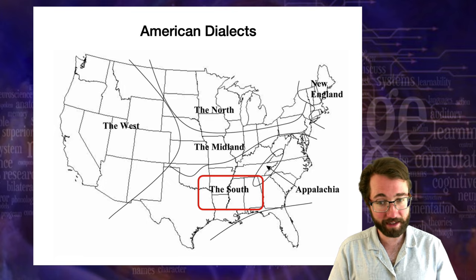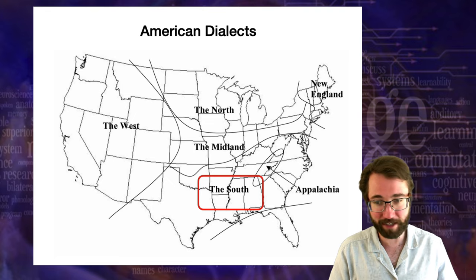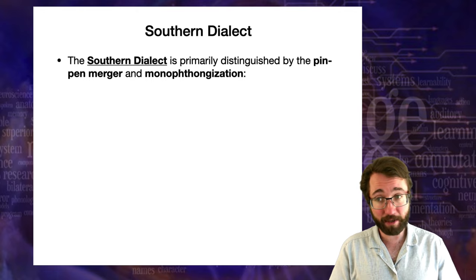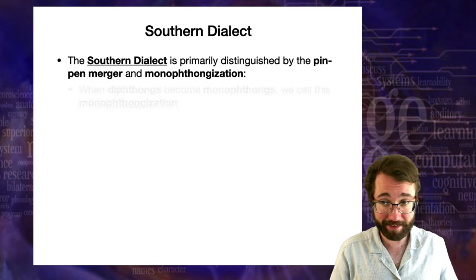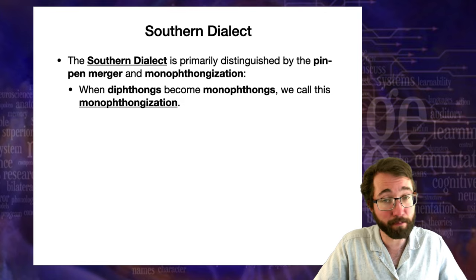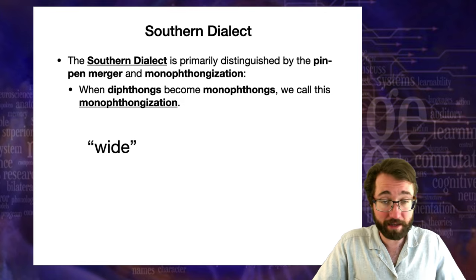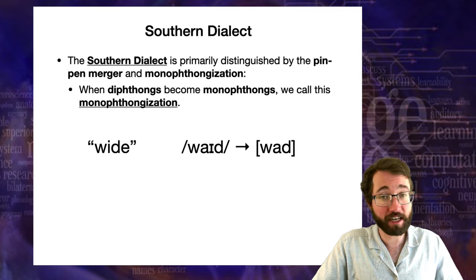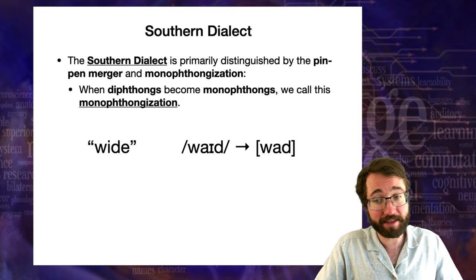Our next dialect is the South, in which Appalachia is a special area. The southern dialect in the US is primarily characterized by the pin-pen merger and a phonological rule called monophthongization — when diphthongs become monophthongs. For example, in southern US dialects, the word usually pronounced 'wide' in standard American English is going to be pronounced 'wahd'. The phoneme, the diphthong /aɪ/, is expressed as the sound 'ah' before certain consonants.